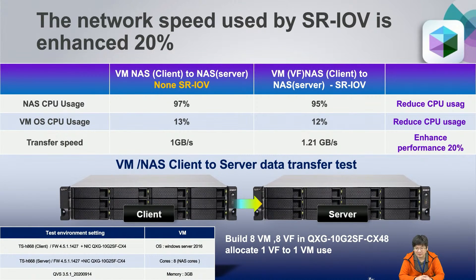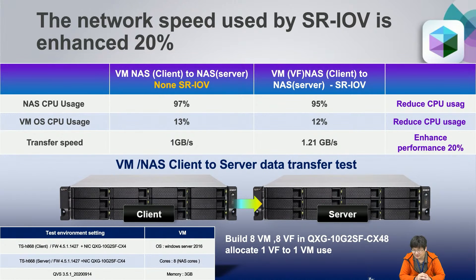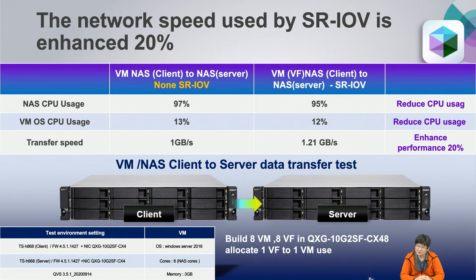We have a test report. If you use SR-IOV, your transfer speed is 1.2 Gbps. But if you have not used SR-IOV, your transfer speed is 1 Gbps. So SR-IOV enhances performance by 20%. At the same time, you can see the NAS CPU usage. Without SR-IOV it is 97%, and if you use the SR-IOV feature, NAS CPU usage drops to 95%, reducing CPU usage.